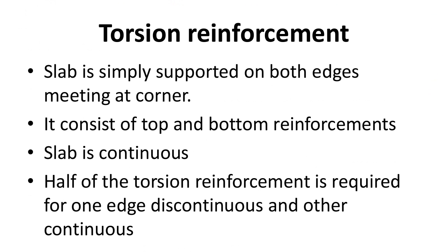For torsion reinforcement: when a slab is simply supported on both edges meeting at a corner, we must provide torsion reinforcement — top and bottom reinforcements up to the edge of the slab. When the slab is continuous on both edges, no torsion reinforcement is needed. When one edge is continuous and the other is discontinuous, half the torsion reinforcement should be provided. Thanks for watching this video. Please subscribe to our channel for more videos.